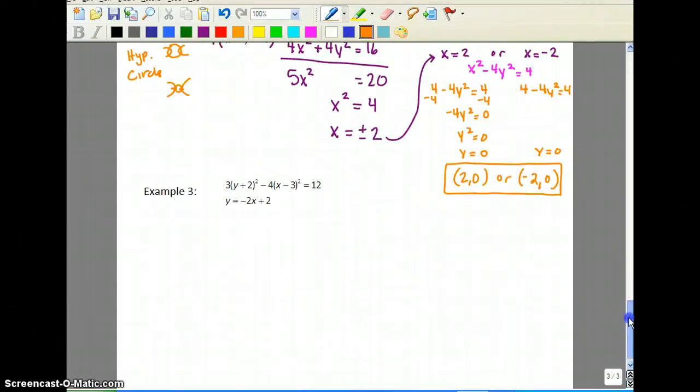Alright, the last one has a lot of algebra in it. Okay, so you've got to be really good with your algebra. You're going to have to use substitution because they don't both have x squareds or y squareds. So we're going to substitute this negative 2x plus 2 in for y. So we have 3 times negative 2x plus 2 plus 2 squared minus 4 times x minus 3 squared equals 12.